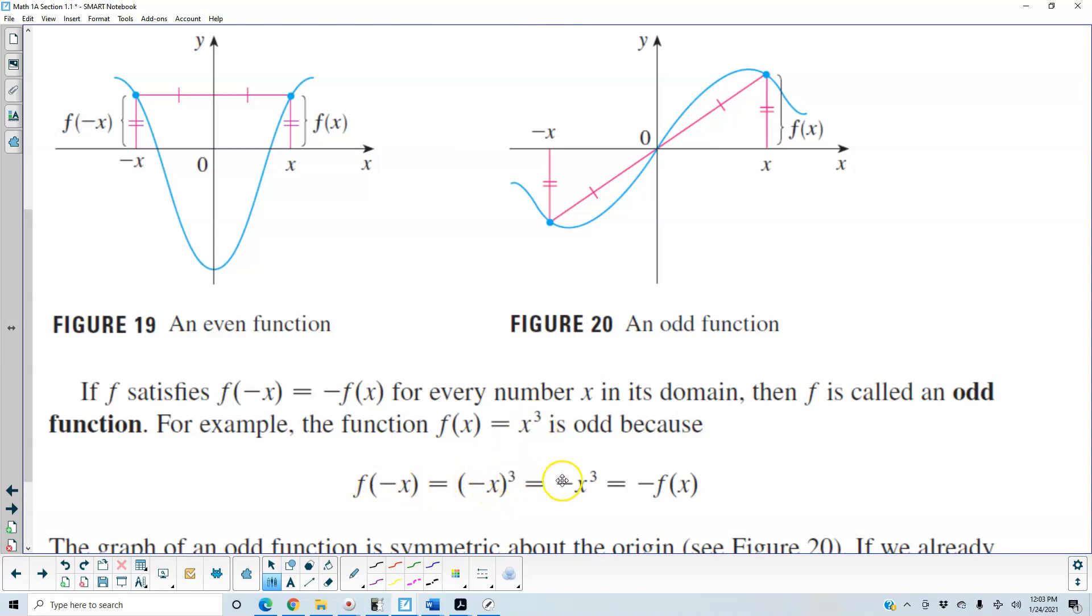(-x)³ becomes -x³, which means we've taken the negative sign and multiplied it by f(x). So f(-x) = -f(x), showing these are equal.